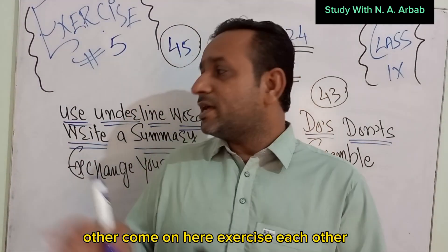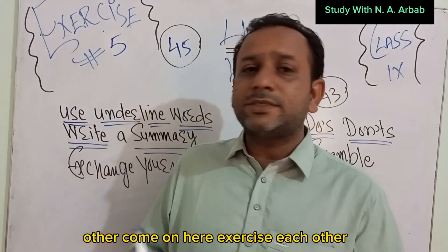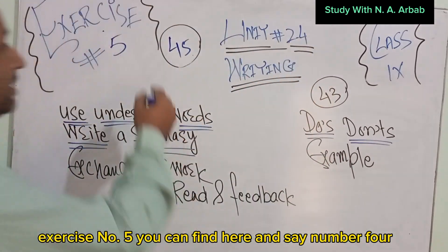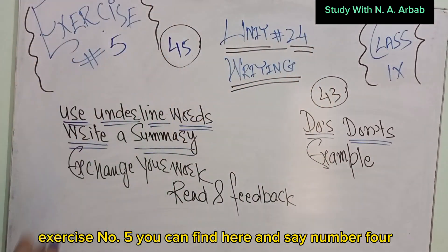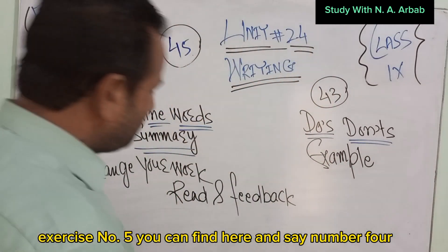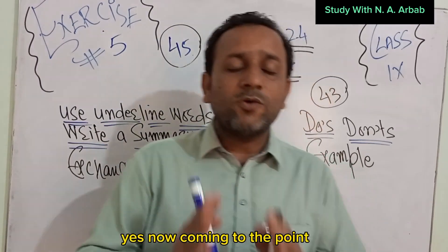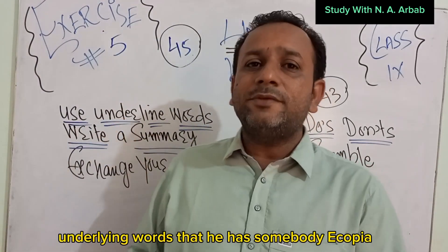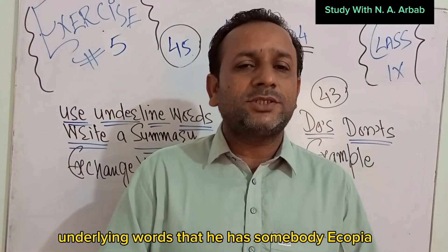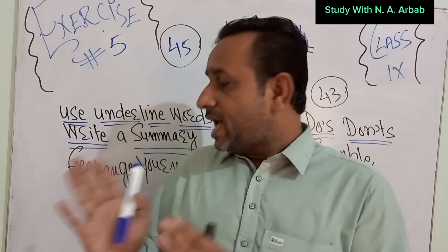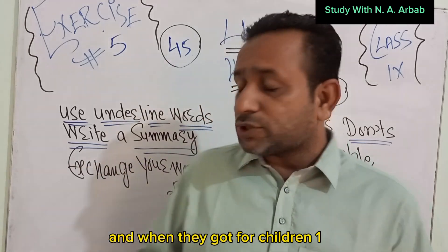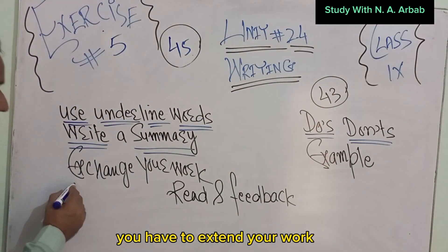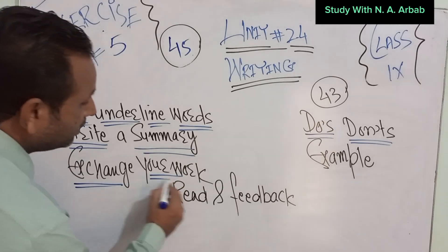If you have this exercise, it's exercise number 5, and you can find it on page 44. Coming to the task: underline words, write the summary, and then you have to exchange your work with a partner.